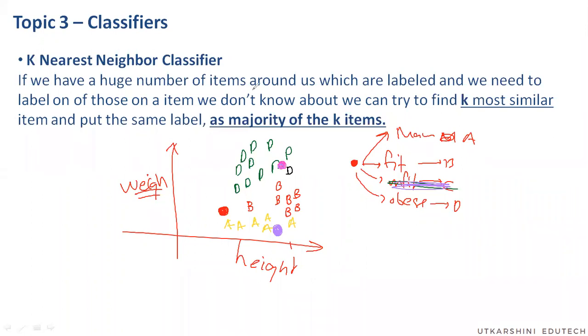So K-nearest neighbor says exactly the same thing. The only difference is that instead of the most similar, we use K of the most similar items and we take the majority vote to put the label.